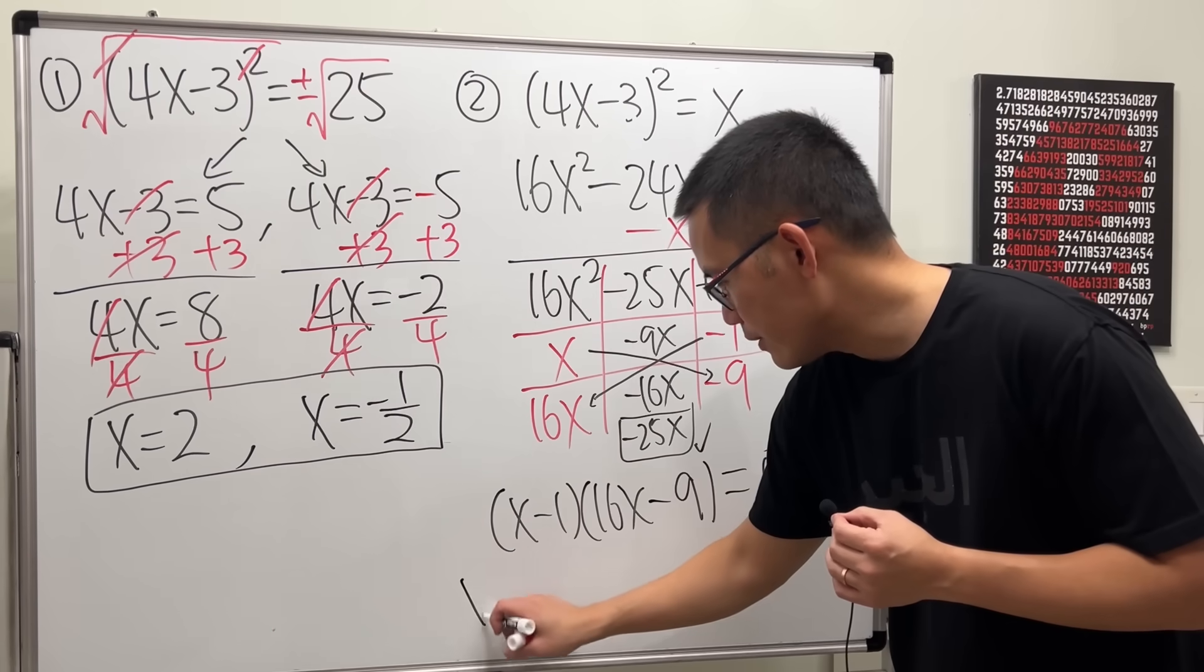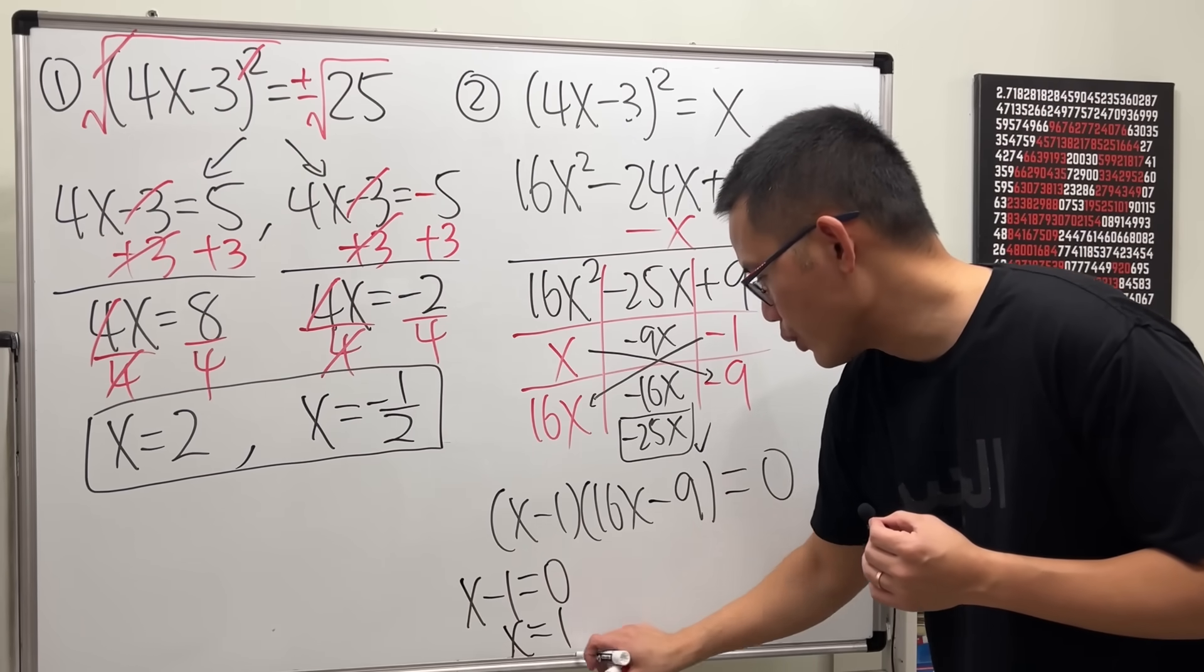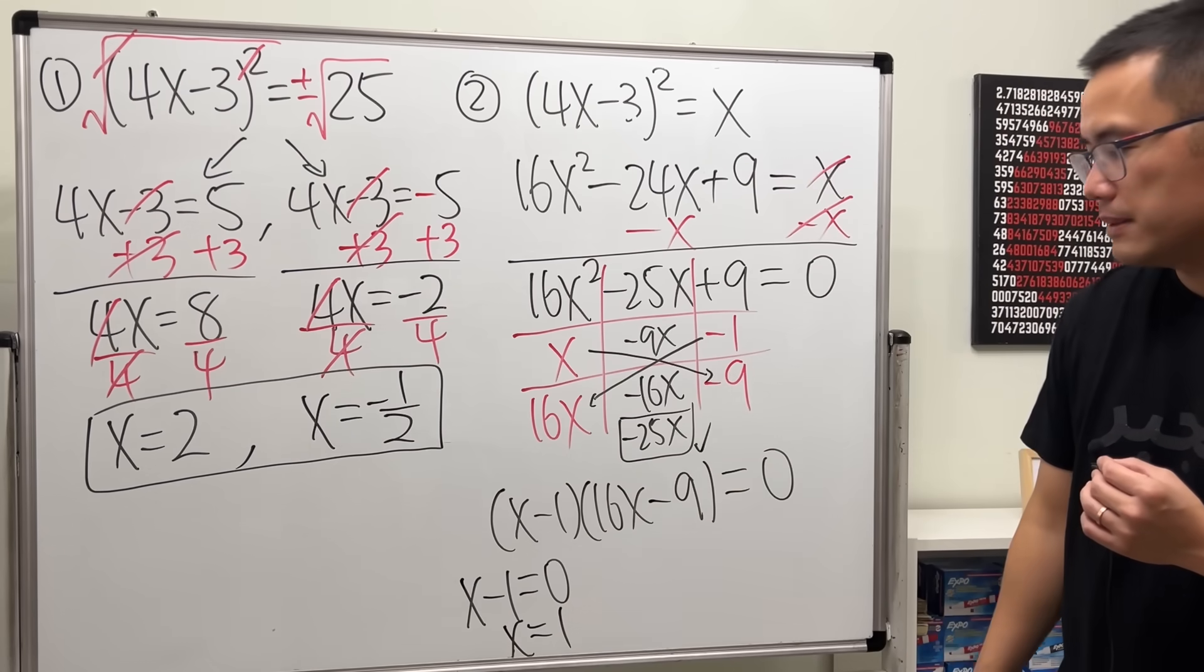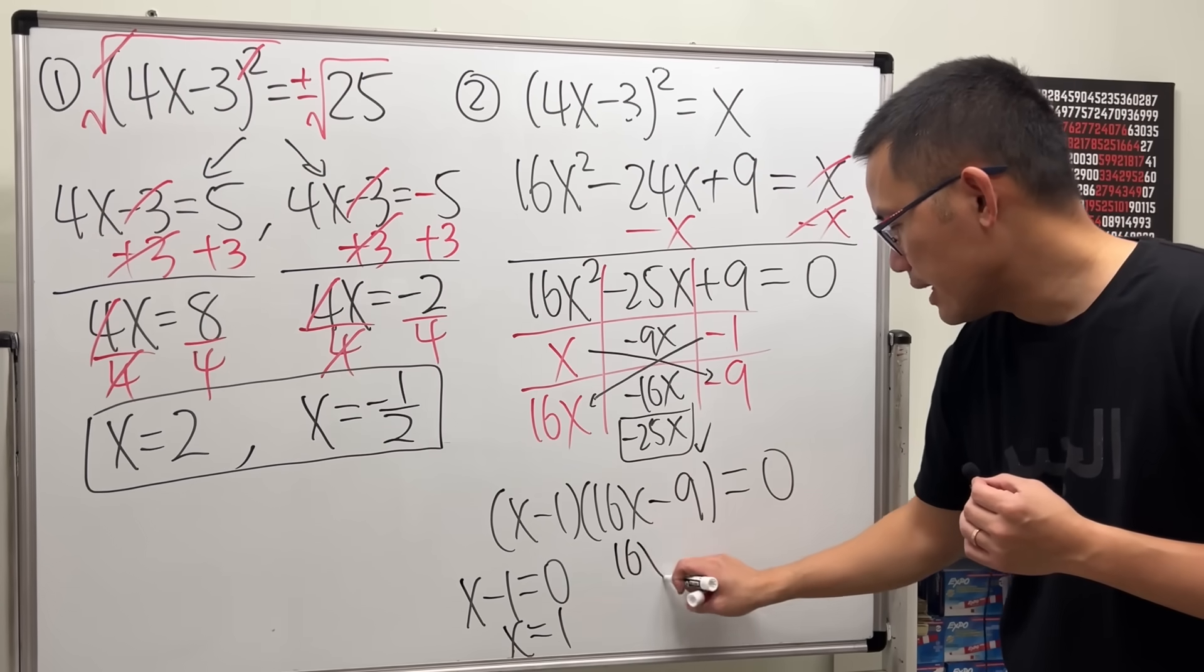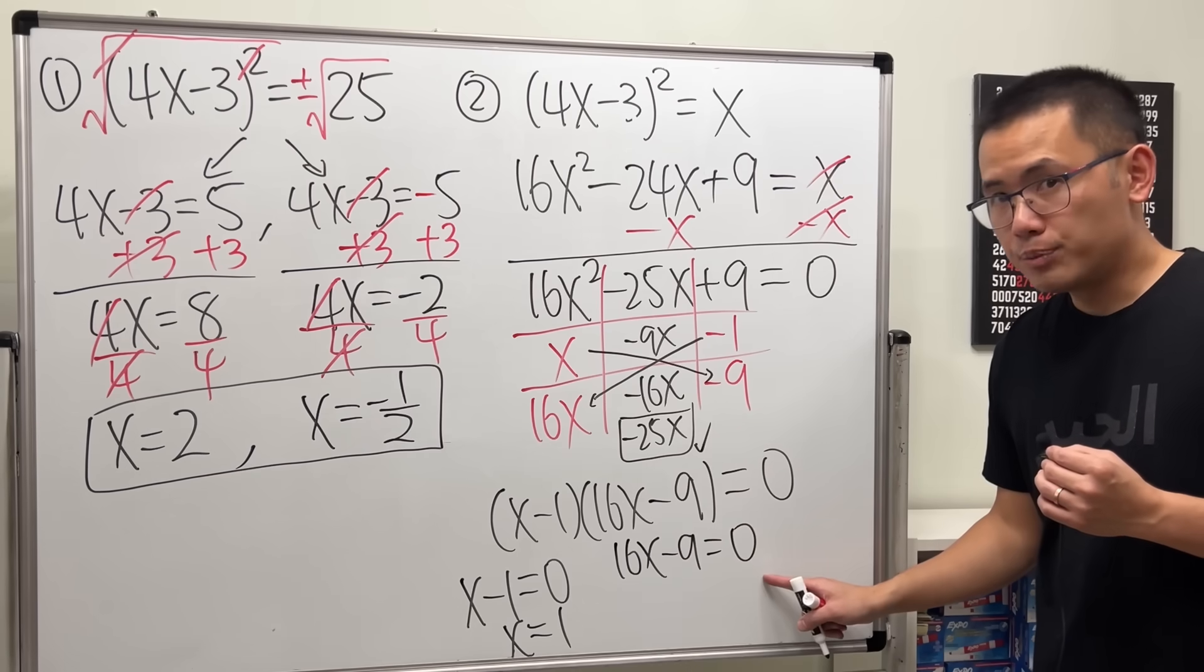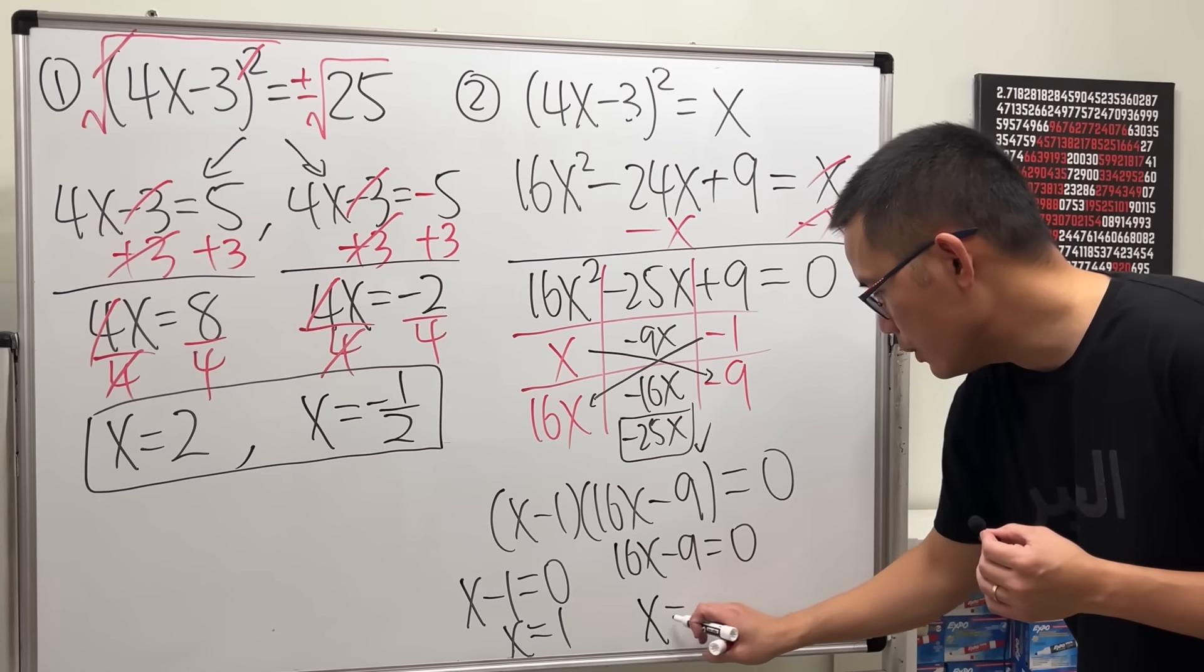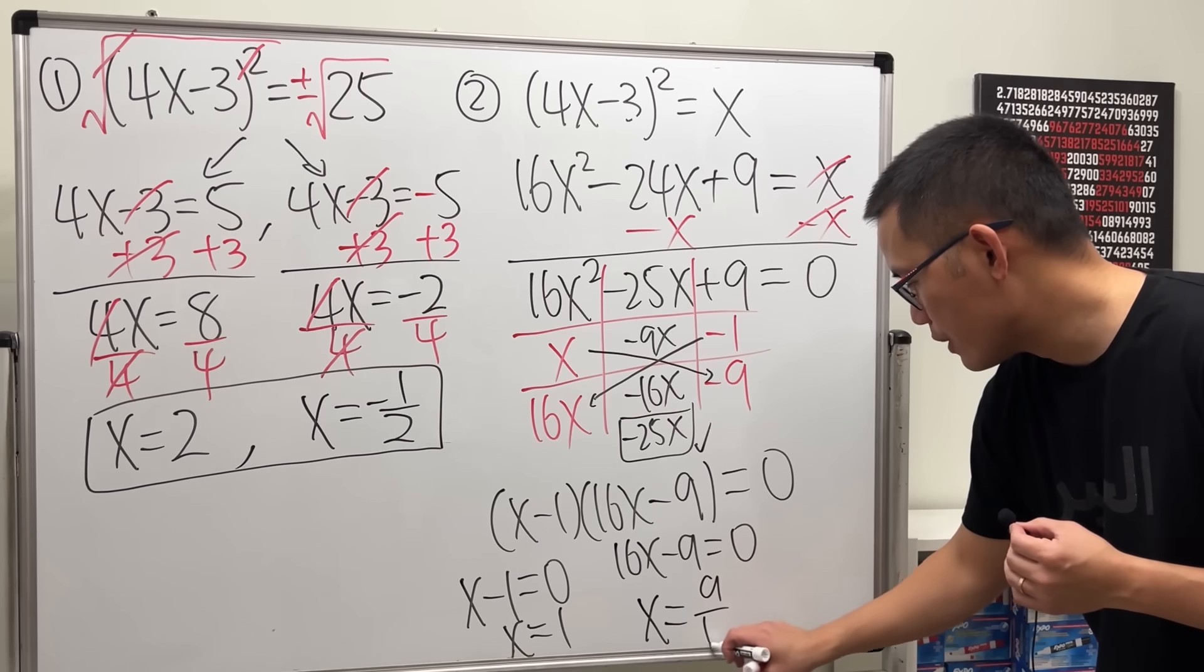So, you put the first factor now to be 0. And, the first answer is x is equal to 1 after we add 1 to both sides. And, then, 16x minus 9 equal to 0. Add 9 to both sides. Divide the 16 to both sides. So,